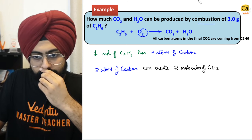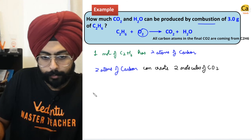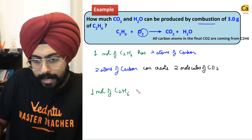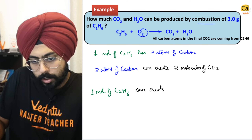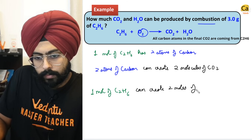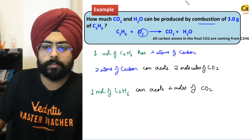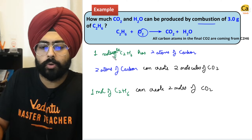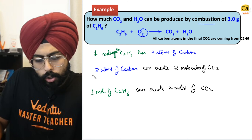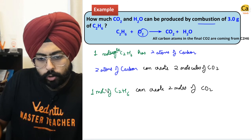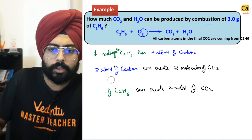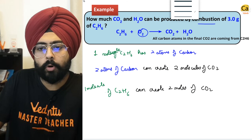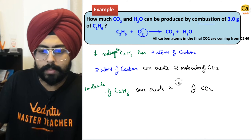Combining these two statements together: one mole of C2H6 can create two moles of CO2. One molecule of C2H6 has two atoms of carbon; two atoms of carbon can create two molecules of CO2. So one molecule of C2H6 can create two molecules of CO2.